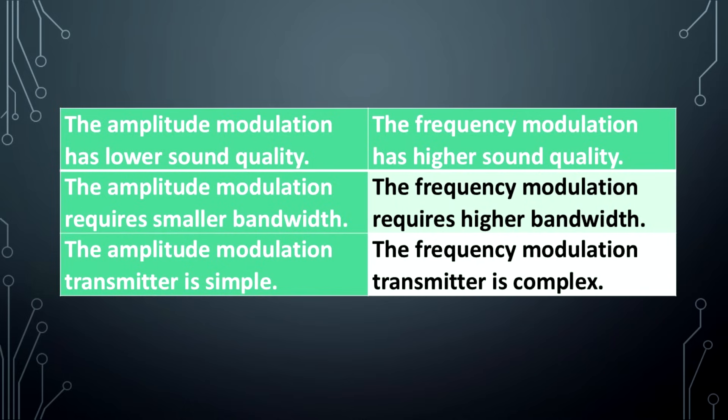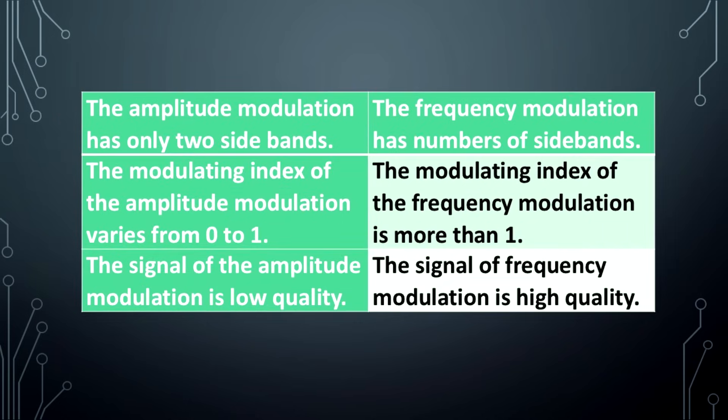The amplitude modulation transmitter is simple; the frequency modulation transmitter is complex. Amplitude modulation has only two sidebands. Frequency modulation has a number of sidebands.